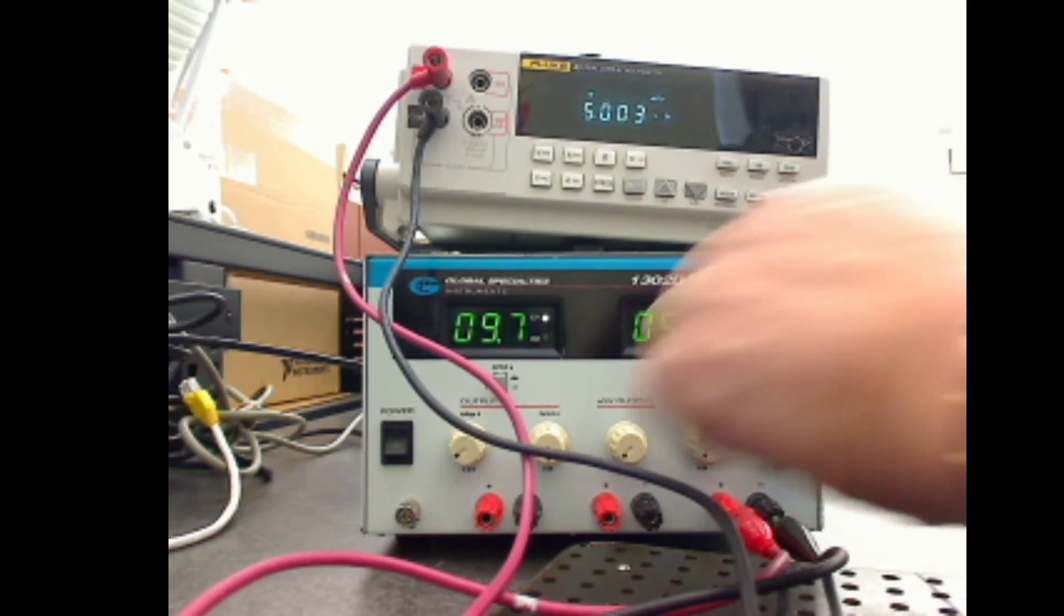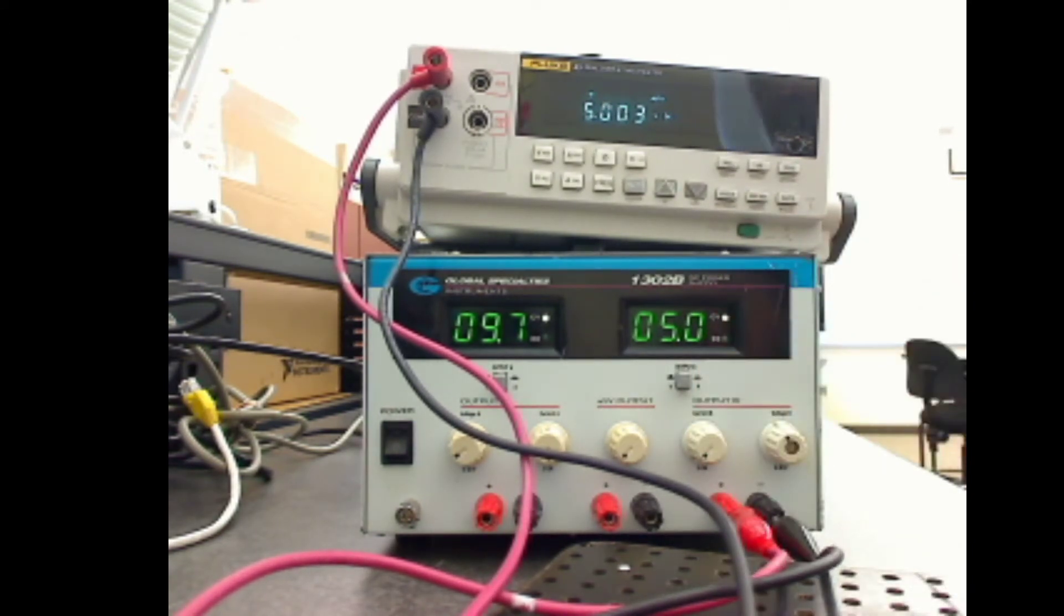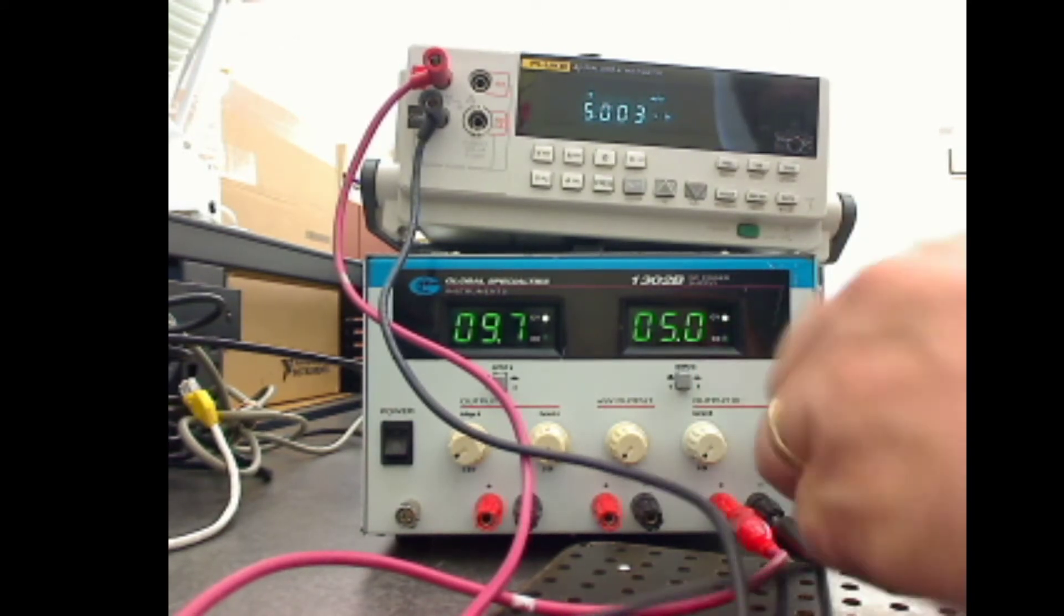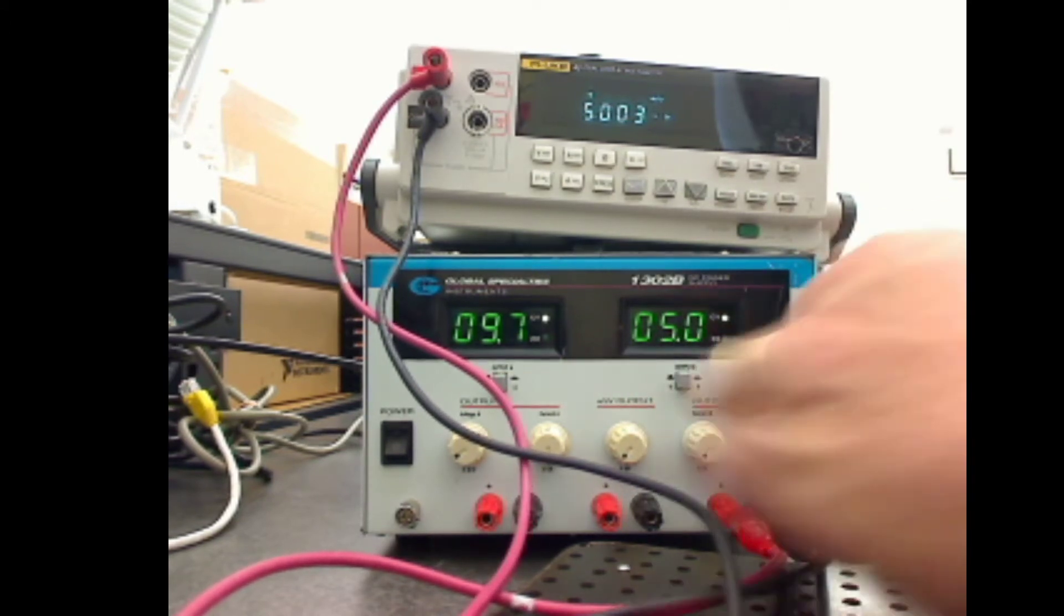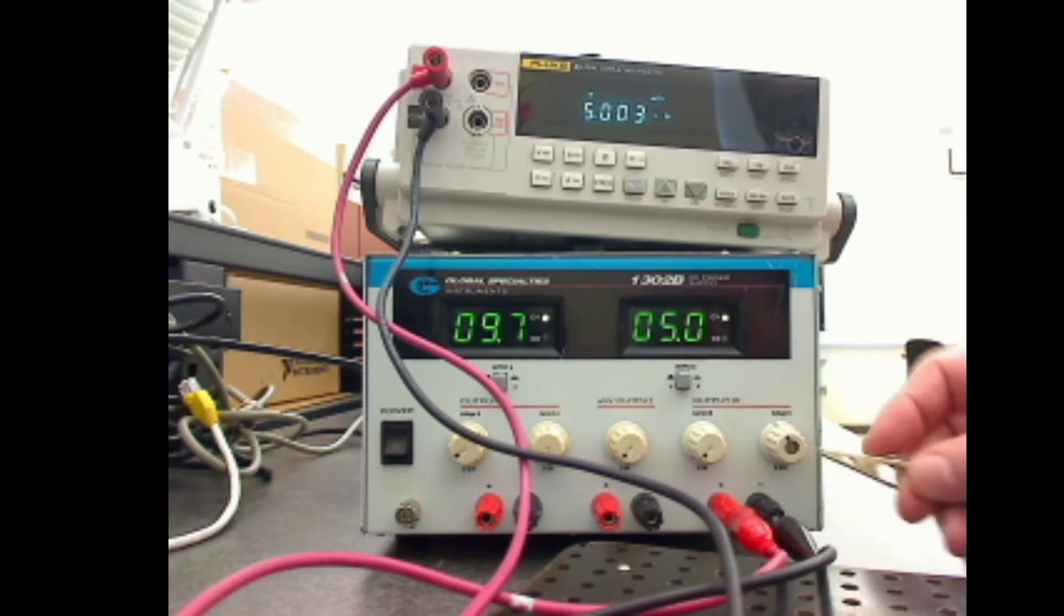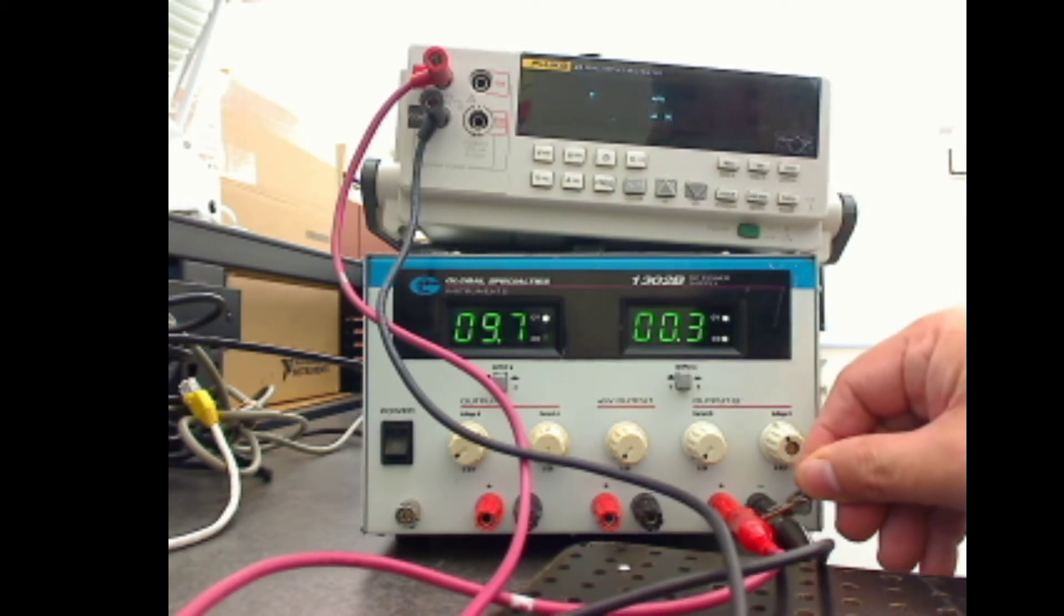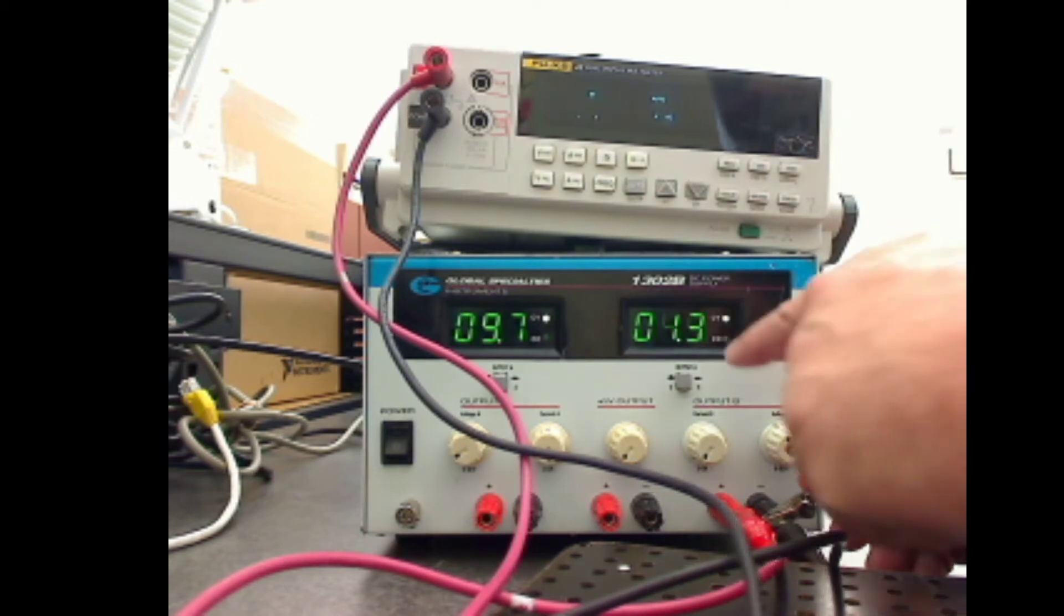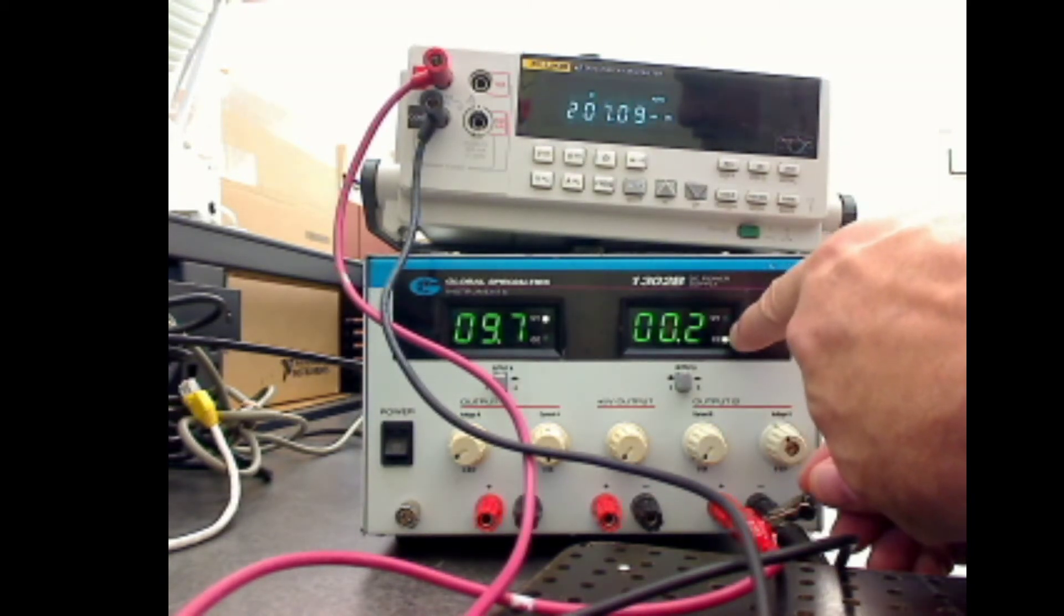Now I've got my current knob, my current protection knob here turned all the way down. So this is a safety thing. If I shorted this out - so again, you don't want to try this at home - but if I short these out, even just with this connection here, notice that it's dropping down here. The CC light is coming on, saying constant current.